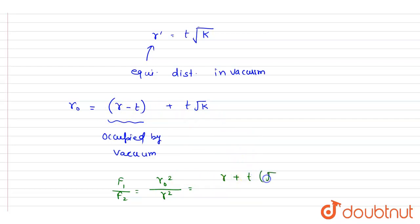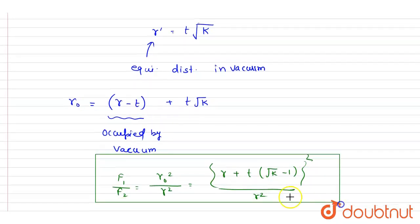Plus t into under root k minus 1, whole square, divided by initial distance which was only r square. This will be the answer of this question. Now you can check for the option.